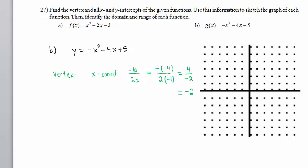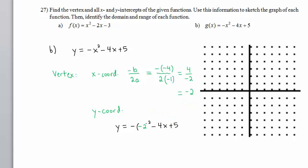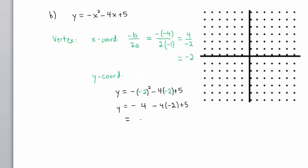To find the y-coordinate, we will take the x-coordinate, which is negative 2, and replace the variable x with that value. Since we are inserting a negative value, we will wrap it in parentheses. The y-coordinate is negative of negative 2 squared minus 4 times negative 2 plus 5. Order of operations requires us to compute the exponent first. Negative 2 squared is positive 4, so we have negative 4, then negative times negative is positive 8, plus 5, and 13 minus 4 is 9.